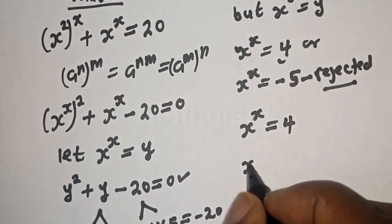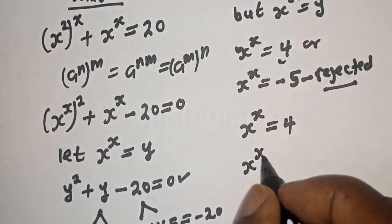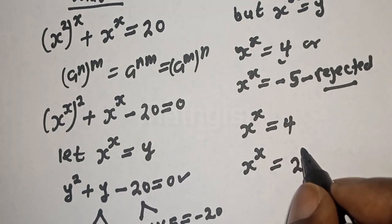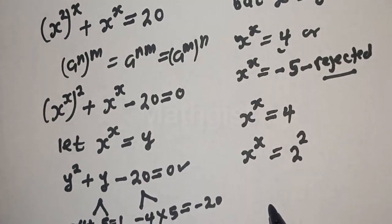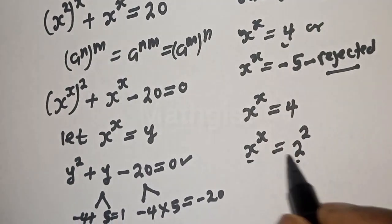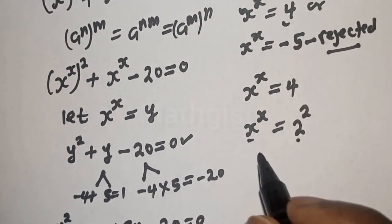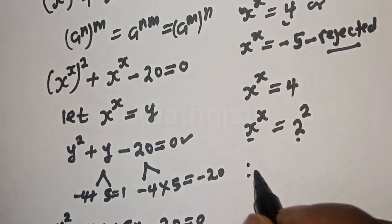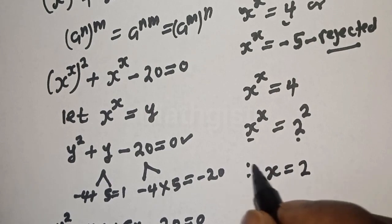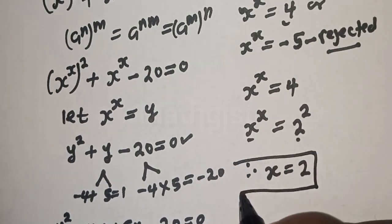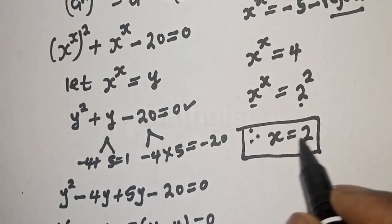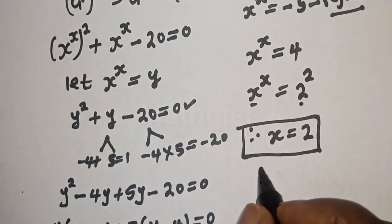s raised to power s equals 4 can be written as 2 squared. Looking at this, the base is equal to 2 and the exponent is also equal to 2, therefore s is equal to 2. This is the final answer. Let's check to confirm.